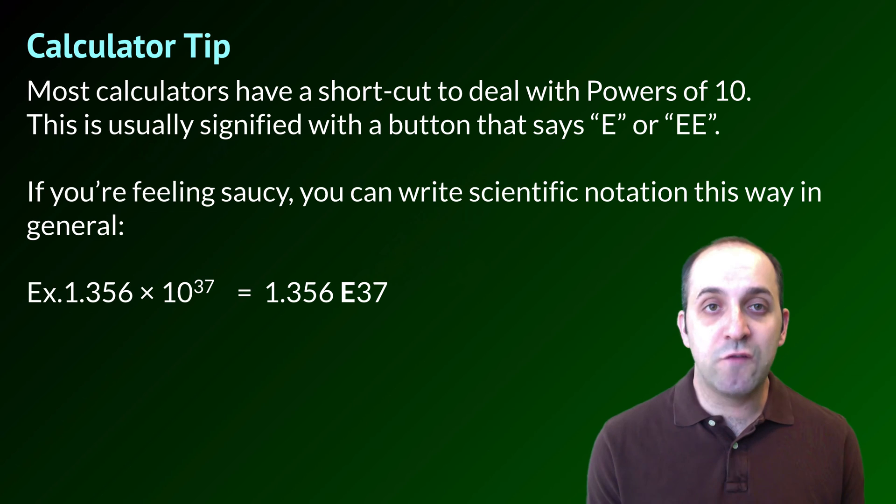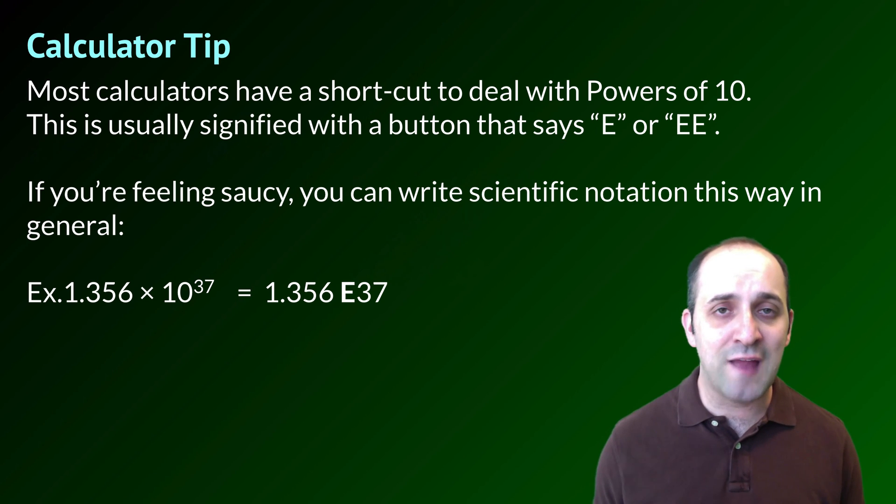Before I leave you, I just wanted to give you one last calculator tip. Most calculators have a shortcut that you can use to deal with powers of 10. This is usually signified with a button that either says capital E on it or capital double E together. That E stands in for times 10 to the. This is because you might get a little bit bored or you might be prone to make a mistake in typing in times 10 to the and working out your parentheses each time. Here's an example written out for you so you can see how this works. You can take 1.356 times 10 to the 37, and you can rewrite that as 1.356 E to the 37. That E stands in for times 10 to the.